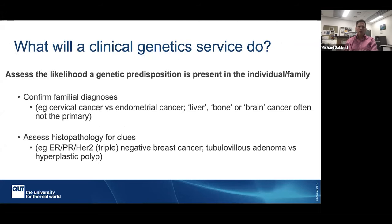If you do refer to a clinical genetic service, what will they do? They will assess the likelihood that a genetic predisposition is present for two reasons: first, to work out what the risks are to the individual sitting in front of them — do they need to be worried about cancer, do they need some sort of intervention to monitor for cancer? The second big question is, can genetic testing help in this situation? Because genetic services have limited budgets, they can't offer genetic testing to everyone, so they have a triaging process. Just because you refer someone doesn't guarantee they'll be offered a test.